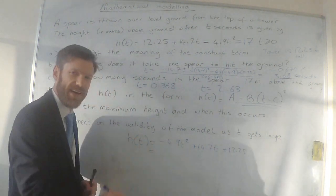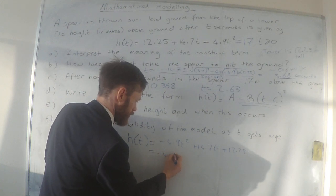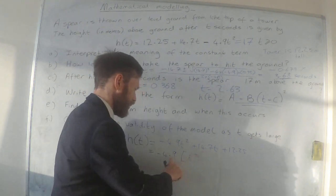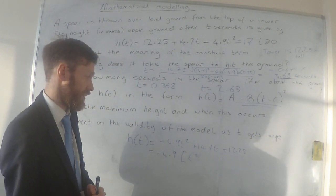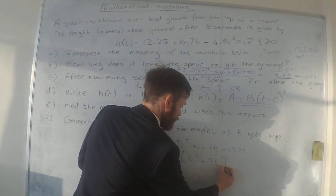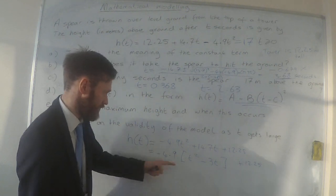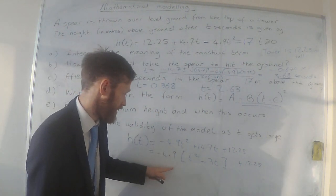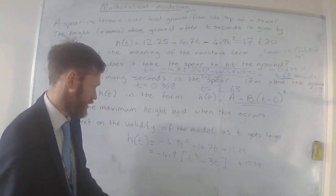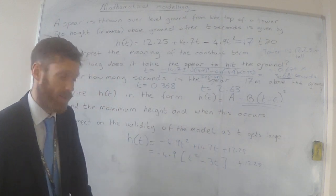Next, factorise that -4.9 outside. 14.7 ÷ (-4.9) is -3. So I've just factorised that -4.9 out from the t² and the 14.7t. Let's do a quick check - if you multiply this back out, you should get back to the top line.